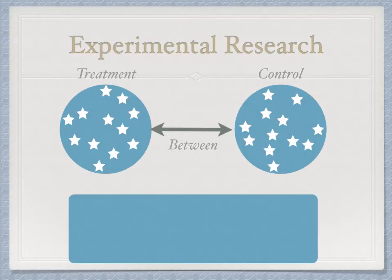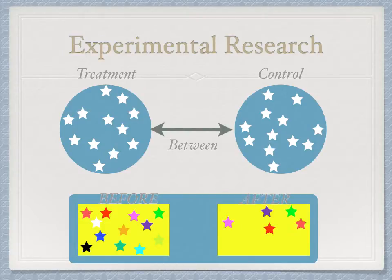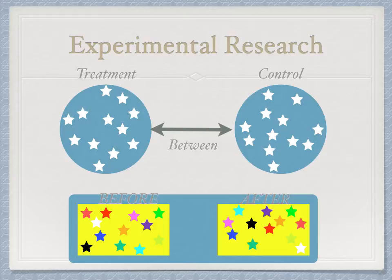In a Within Subjects Design, both conditions happen within each subject. In this graphic, each colored star represents a different individual. We might do a study with before and after, getting a data point from each individual at both time points — that's Repeated Measures. It could also be that participants receive both the Control and Experimental conditions. The key point is that we get multiple data points from one individual, whereas in a Between Subjects Design we only have one data point per individual.